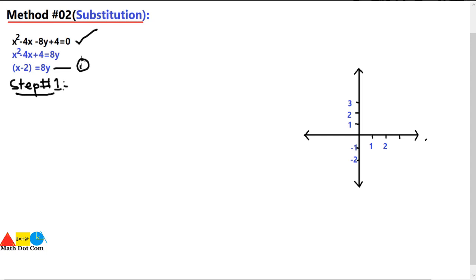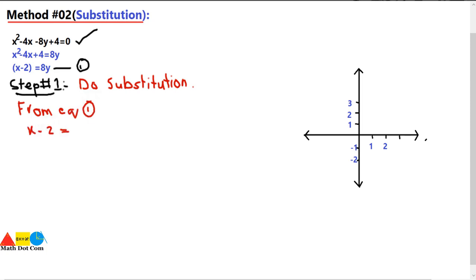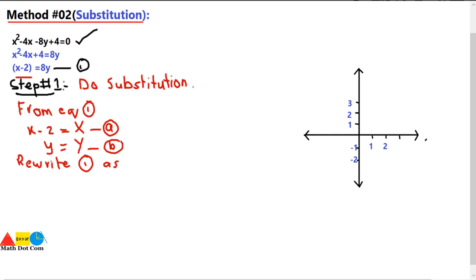Step one of the substitution method: from equation number 1, we substitute X for (x minus 2) and Y for y. These give us equations A and B. Substituting back into equation 1, we get X squared equals 8Y. This is equation number 2, written in capital variables to differentiate from the original.